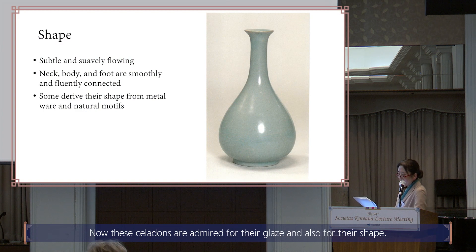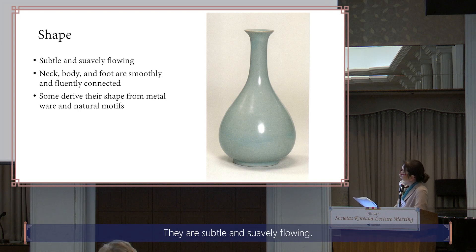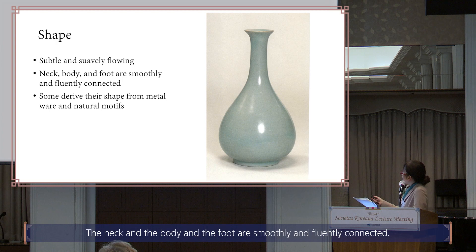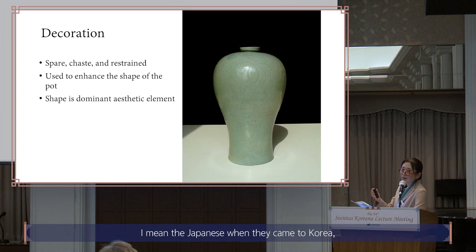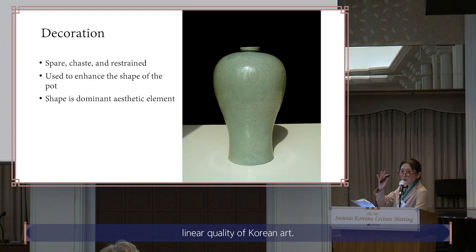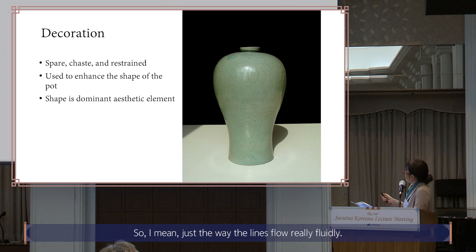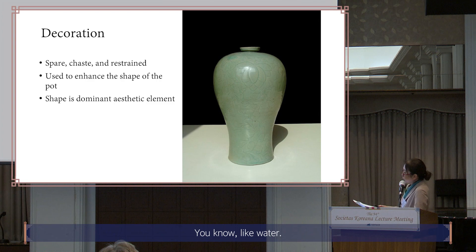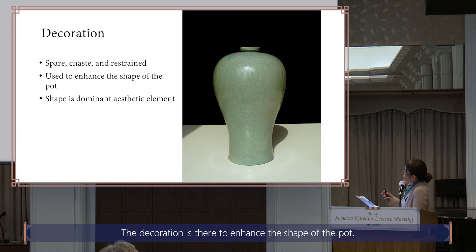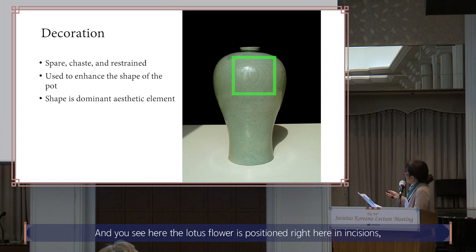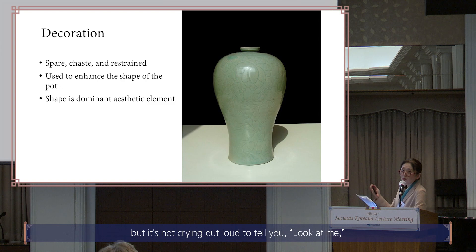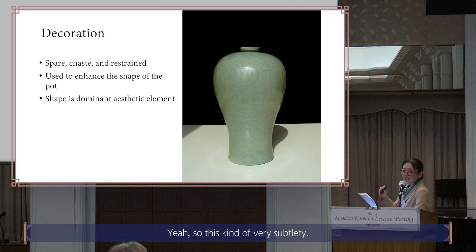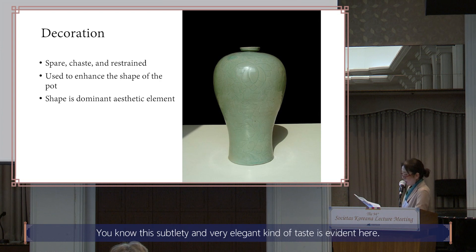The Japanese also remarked on the beautiful linear quality of Korean art — the way lines flow really fluidly, like water. Decoration is not loud; it's there to enhance the shape of the pot. The lotus flower is positioned here in subtle incisions, not crying out loud, but in harmony with the overall shape of the pot. This subtlety and very elegant kind of taste is evident throughout Koryo celadons.